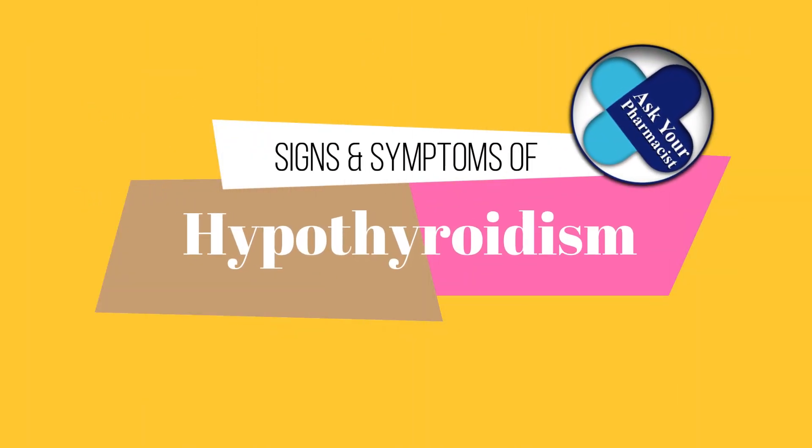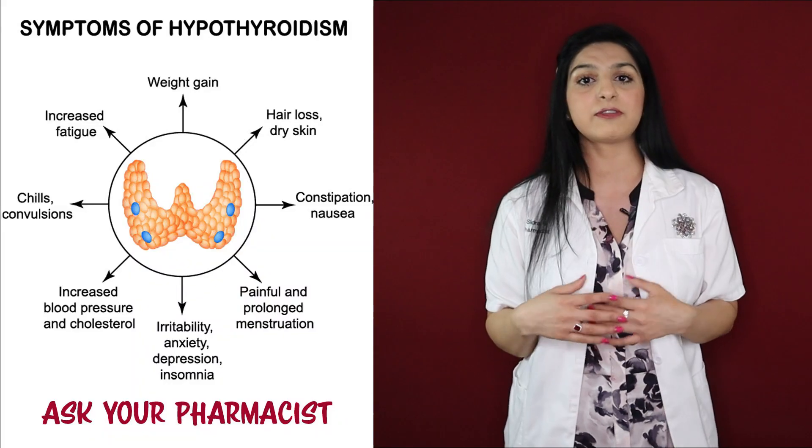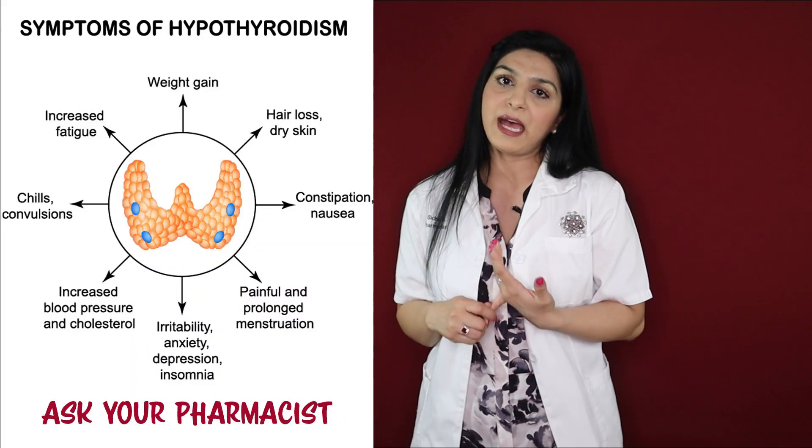Now let's see how to identify whether you have hypothyroidism or hyperthyroidism. In hypothyroidism, you may feel tired or fatigued, gain weight, experience forgetfulness, and women may have frequent or heavy menstruation. You may also have dry or coarse hair, a hoarse voice, a slow heart rate, dry skin, constipation, and fluid retention — which may make you feel bloated or cause puffiness on your face.